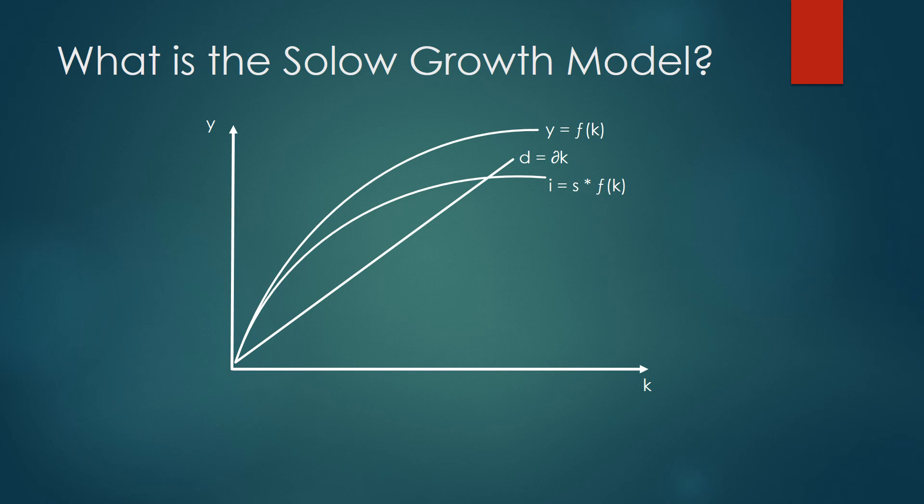We can explain the Solow growth model through a set of three curves as illustrated on the screen. On the x-axis we have little k, and little k is capital per worker, which we can rewrite as capital K divided by N, where capital K is the overall amount of capital in the economy and N is the overall number of people in the workforce. Little y is output per worker, which we can rewrite as capital Y — the overall output in the economy — divided by N, the number of people in the economy.